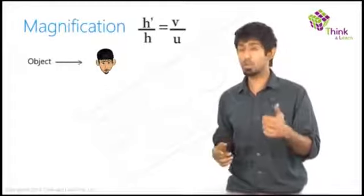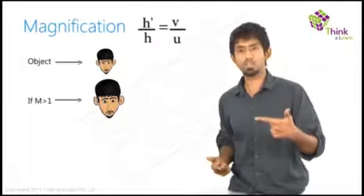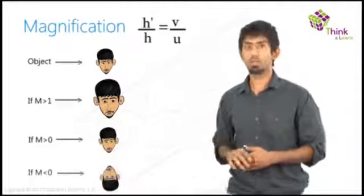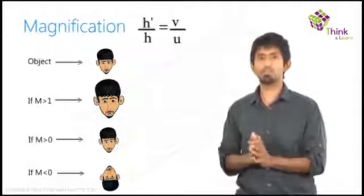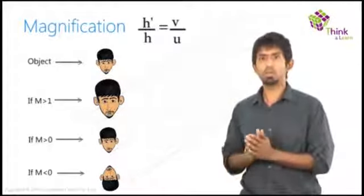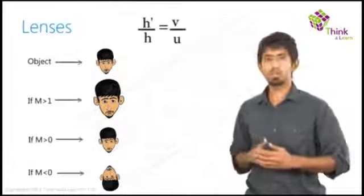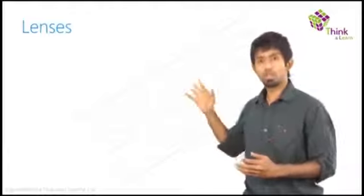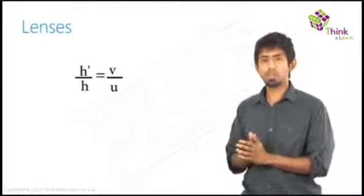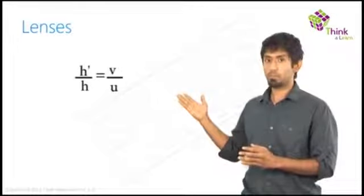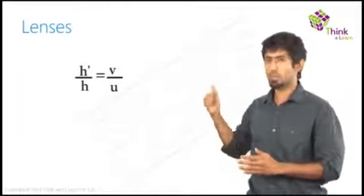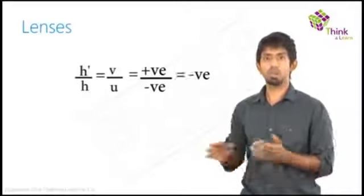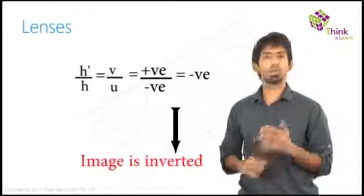If the magnification is greater than 1, the size of the image is larger. If the magnification is positive, then the image is erect. If the magnification is negative, then the image is inverted. So we are trying to get as much information as possible from that little quantity called magnification. So in the case of lenses, if we keep it H dash by H as V by U, therefore the magnification will be just V by U. Let's take a normal case like that. V is positive but U is negative so you get the value as negative, which is what you want because the image is inverted.